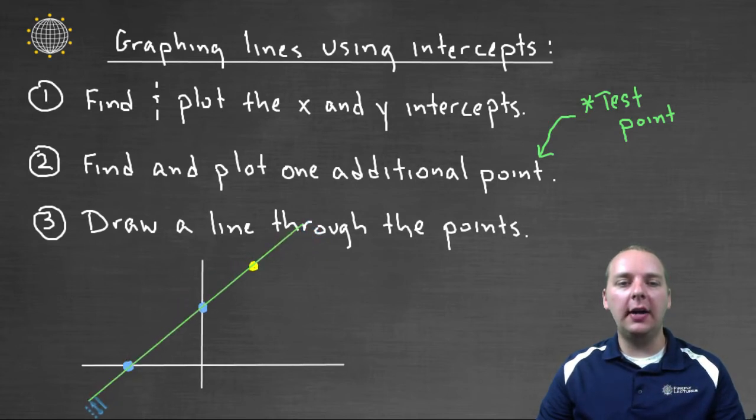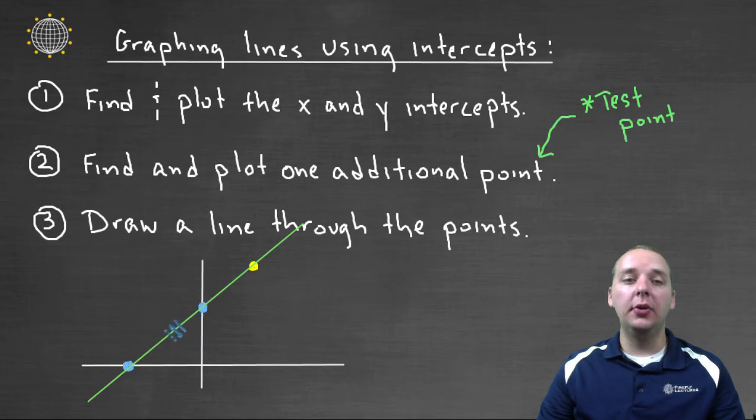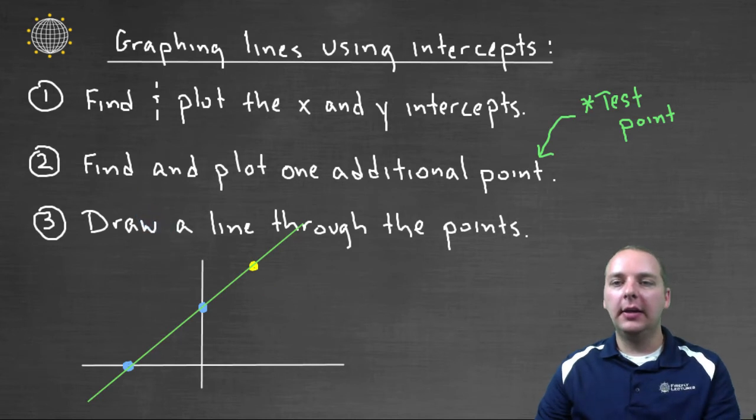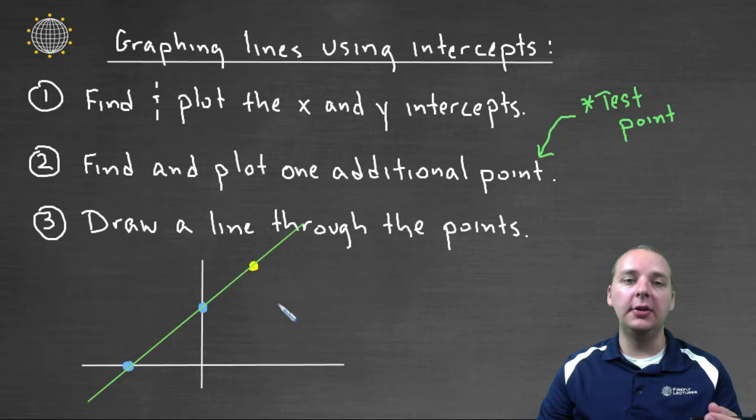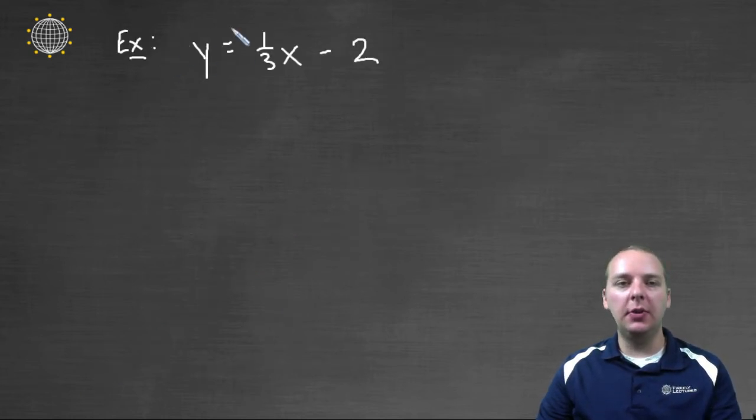And then when you connect your dots, not only is it going through your two intercepts, but it's also going through your test point, and you can be confident in your answer. The last step is simply to draw a line through all your points. It's your intercepts, and your test point. Alright, so let's close out this video with an example.